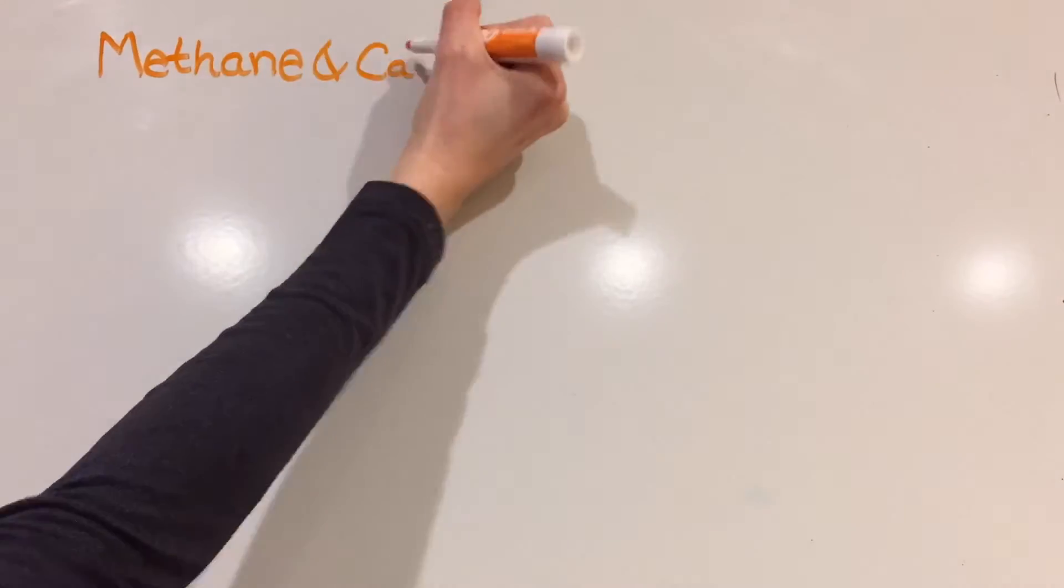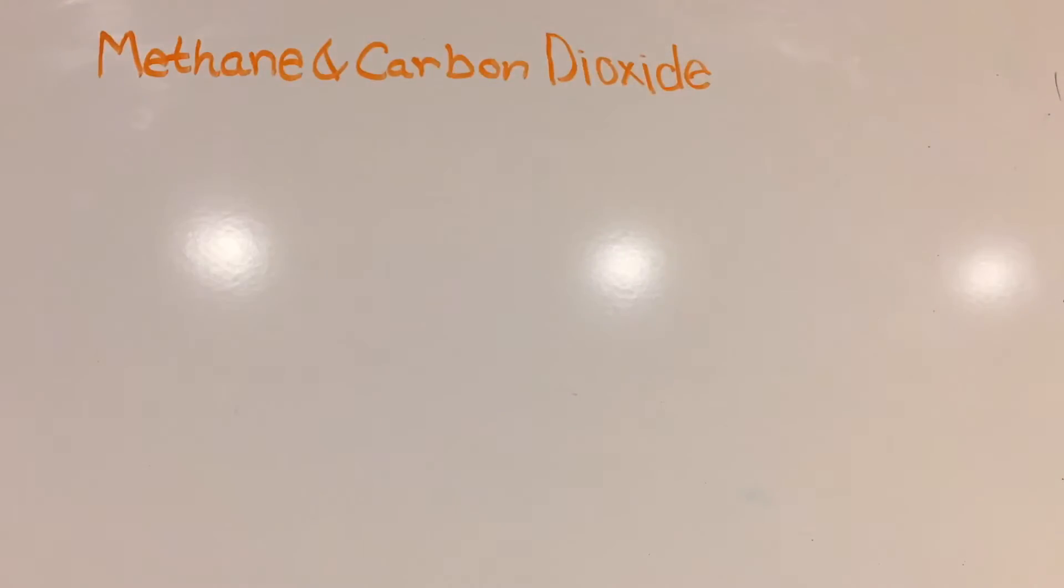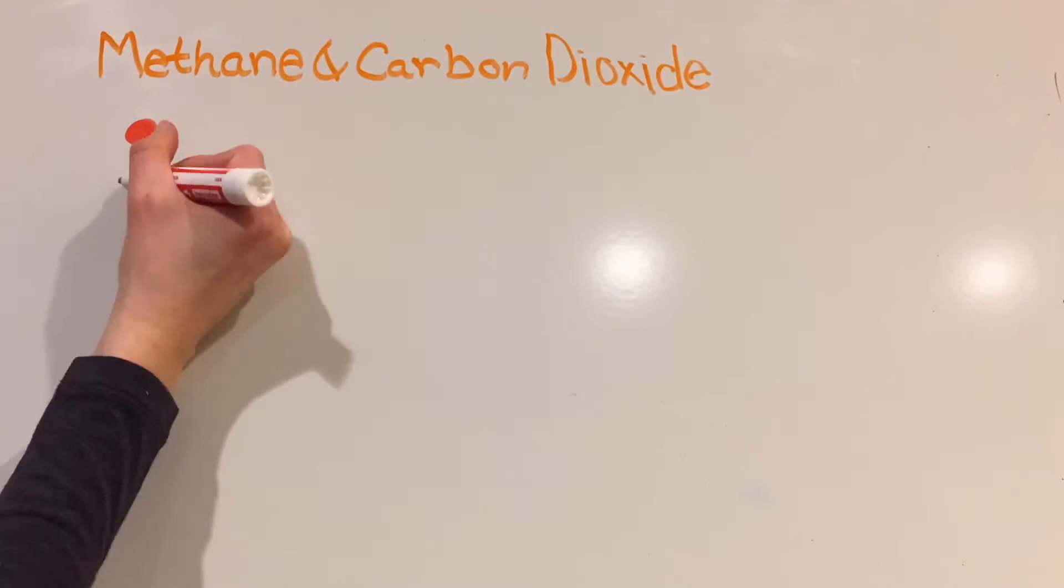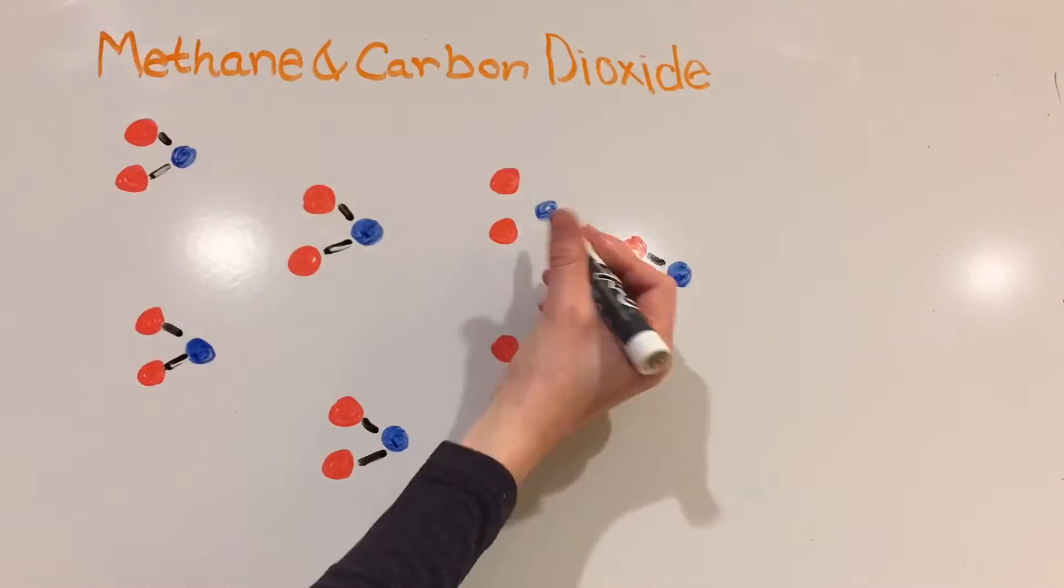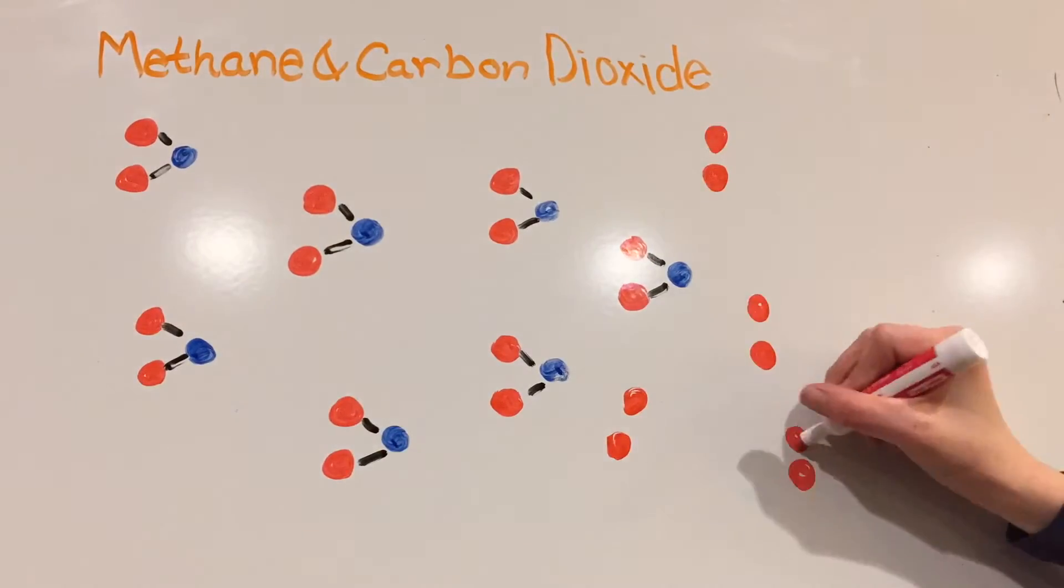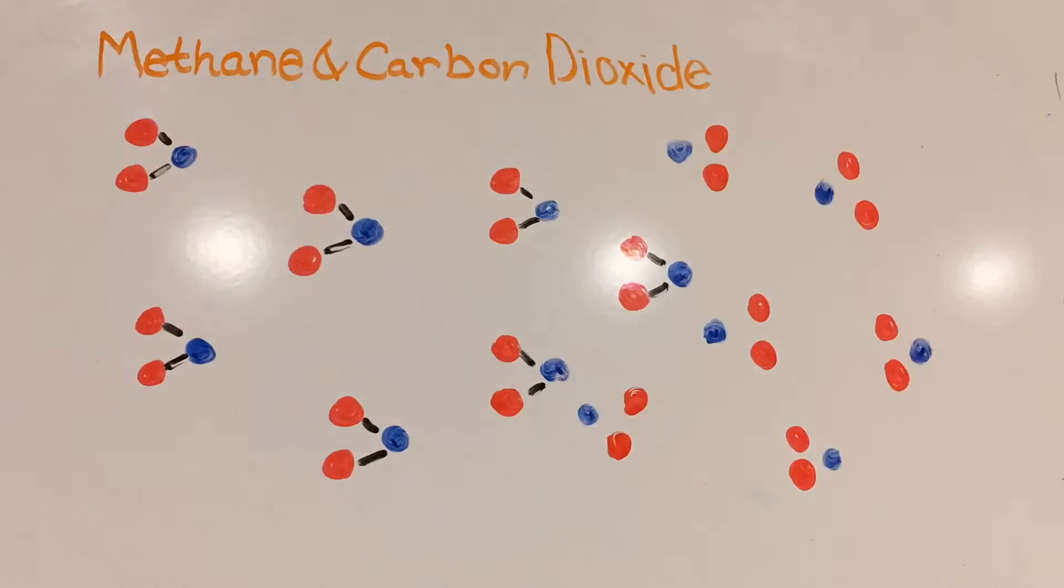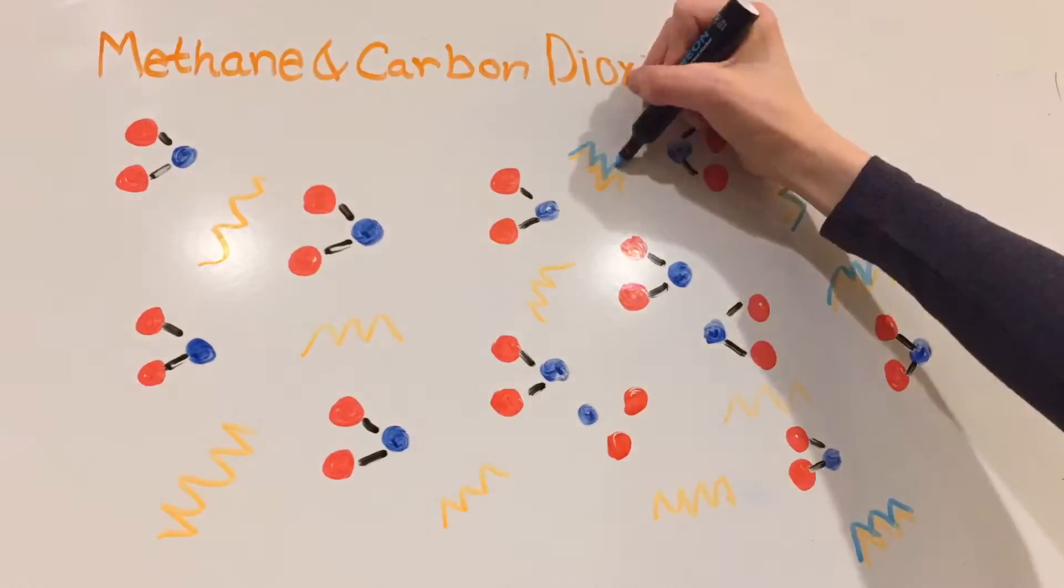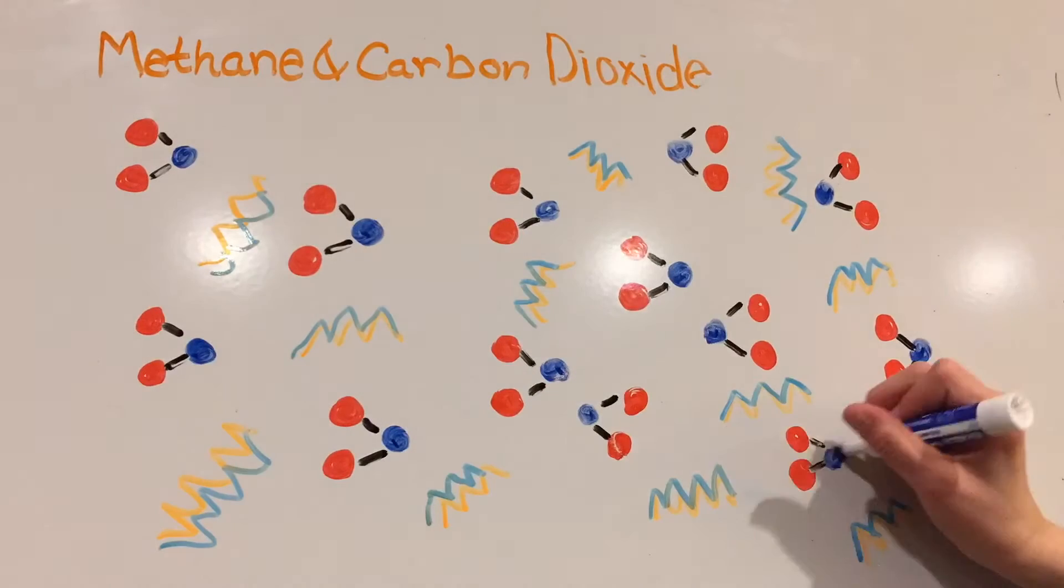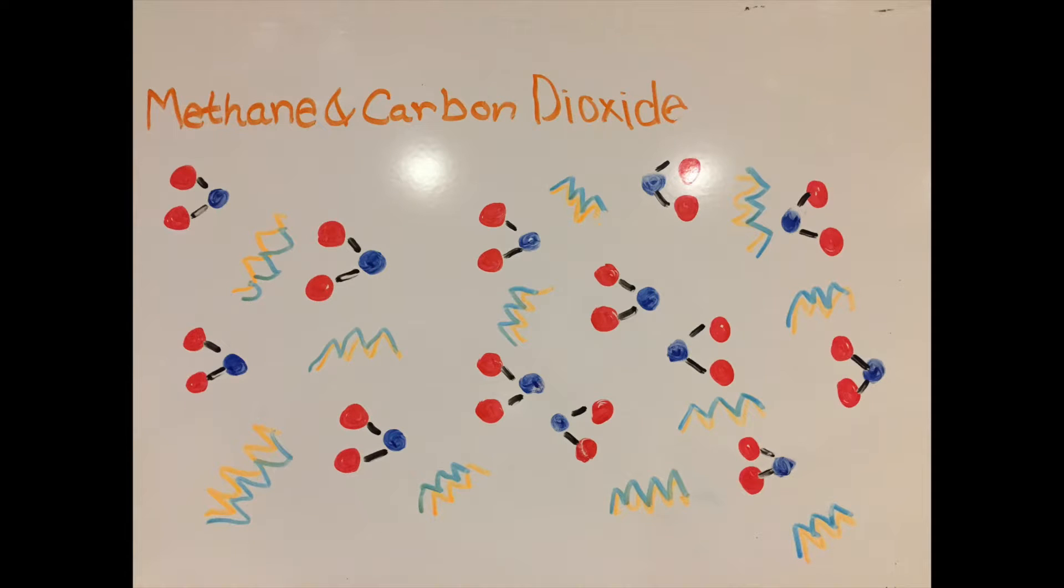So what about the two other major greenhouse gases, carbon dioxide and methane? While neither exists in a polar state, they both manage to absorb radiation. This is because gas molecules remain in constant motion, crashing into each other billions of times per second. This allows both to absorb infrared radiation and therefore warm the Earth.